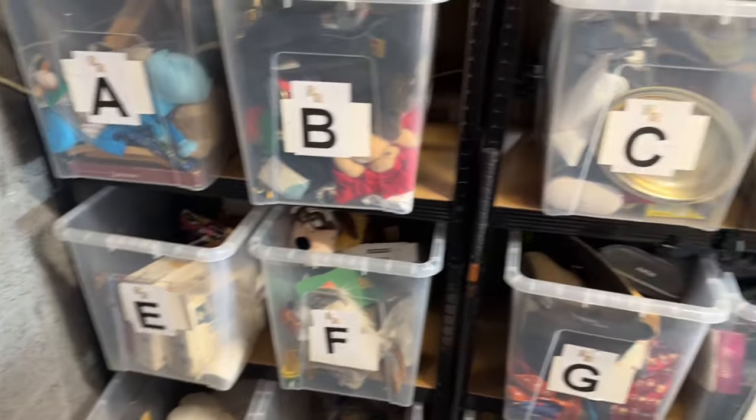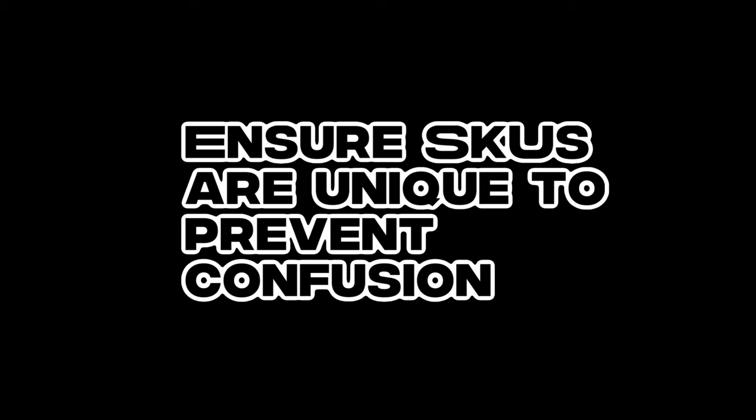Personally, I like to use the ABCD method — meaning I just have boxes running up from A to Z. Once I get to the end of Z and want to start new boxes, I can just do A1, A2, A3 until I get to Z again, and then repeat the process. So once we get to Z26, it becomes A1, A2, A3. You need to make sure that the SKUs are unique to prevent confusion.